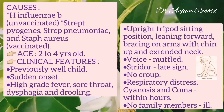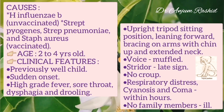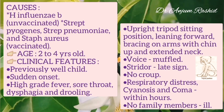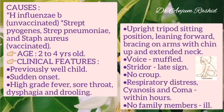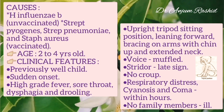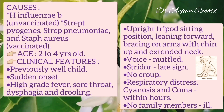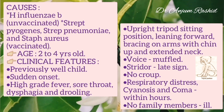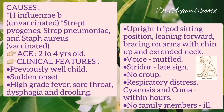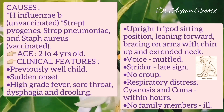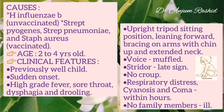In acute epiglottitis, the child typically assumes an upright tripod sitting position, leaning forward, bracing on arms with chin up and extended neck. The voice is muffled, and stridor is a late sign, but there is no croup.